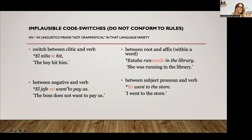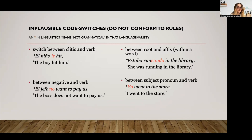When you have code switches that are possible and some that are not — because speakers would say 'I would never say that' — that means there are rules. If you can say that something is not grammatical, that means there are rules you're breaking when saying those things. So that is evidence that code switching is rule-governed.